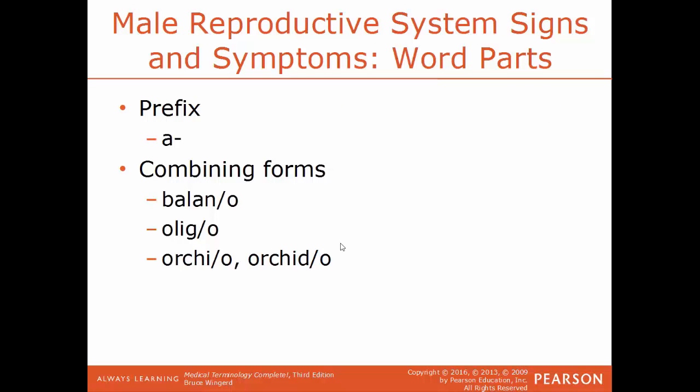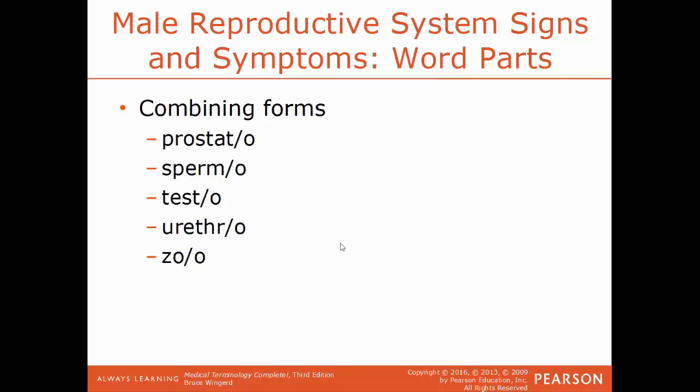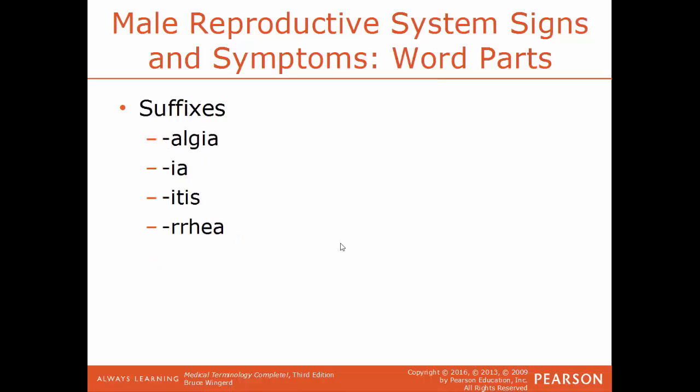Signs and symptoms of the male reproductive system and key word parts: the prefix A means lacking or without. Common combining forms include Milano for glans penis, Oligo for few, Orchio for testes, Prostato for the prostate gland, Spermo for sperm cells, and Testo for the urethra. Suffixes include Algea for painful, Ea for a condition, Itis for inflammation, and Urea for a flow or discharge.